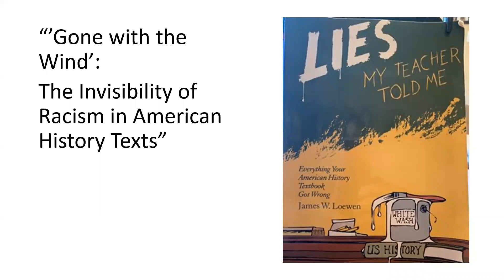I'm having you read the chapter 'Gone with the Wind: The Invisibility of Racism in American History' because it shows how whiteness is centered in the way we are taught U.S. history. This is a textbook that I have had all three of my children read because I think it's important for them to be cognizant of what they are and are not being taught.